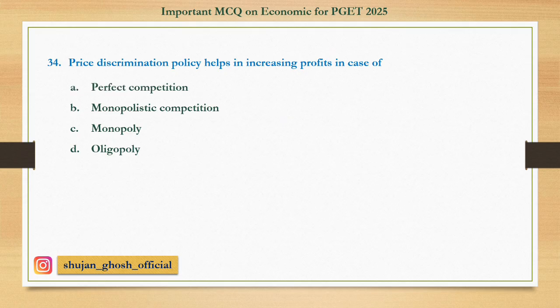Question number thirty-four: Price discrimination policy helps in increasing profits in the case of — option A: perfect competition; B: monopolistic competition; C: monopoly; D: oligopoly. Answer: monopoly.